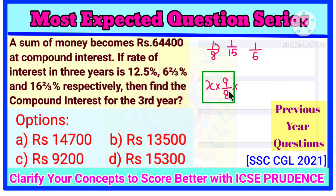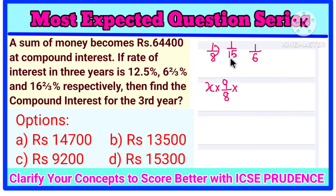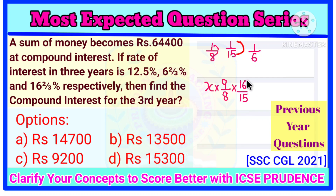On this amount, you are getting interest of 6⅔%, that is 1/15. That means on 15, you are getting Rs. 1 as interest. So 15 plus 1 is 16, giving 16/15. After multiplying, the value becomes X × 9/8 × 16/15. This whole expression is the amount after the 2nd year, or the principal for the 3rd year.